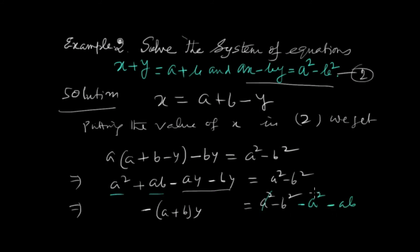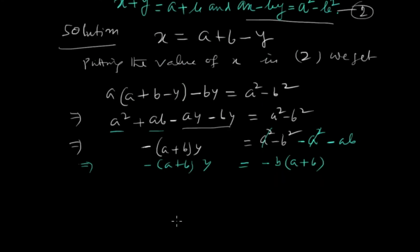We can cancel a squared from both sides. Taking minus of a plus b as common, we get minus bracket a plus b times y equals minus b times bracket a plus b. Therefore y equals b.